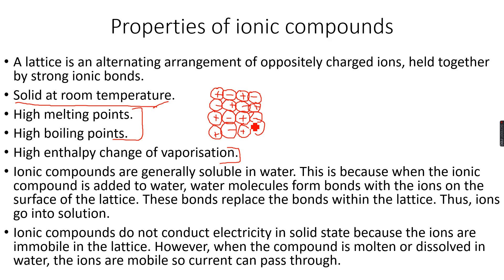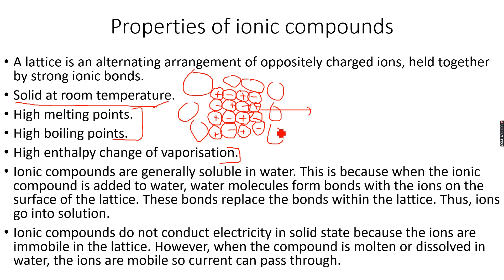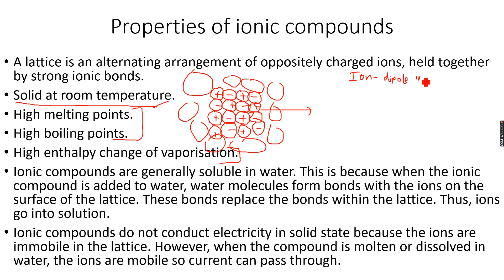Another property of ionic compounds is that they are generally soluble in water. When this lattice structure is added to water, water molecules surround the lattice and start forming bonds with the ions on its surface. This weakens the bonds within the lattice. The bonds that these ions form with water molecules are called ion-dipole attractions or ion-dipole interactions.